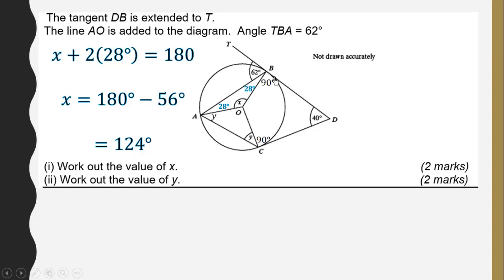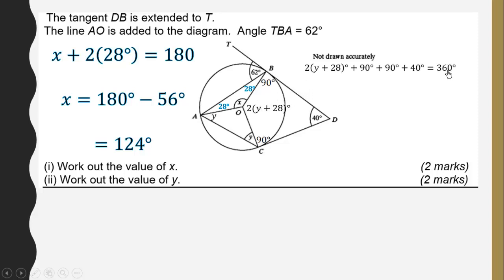This arc is creating this whole angle at the circumference and also the angle at the center. The angle subtended at the center is twice the angle at the circumference — we have reviewed that theorem as well. This allows us to transfer Y into the quadrilateral, and adding all angles and equating to 360 degrees, we solve for Y to get 42 degrees.